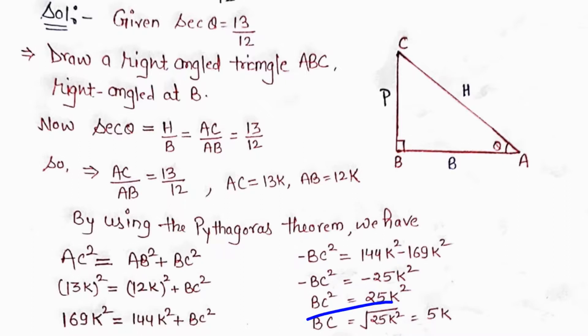BC² = 25K². Taking the square root, BC = 5K, since 25 is the perfect square of 5.